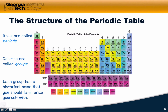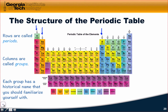Each group has a historical name that you should familiarize yourself with. Group one is known as the alkali metals. The second group is the alkaline earth metals. The 13th group is often referred to as the boron group. The oxygen group is called the chalcogens. Here we have the halogens. Group 18 is known as the noble or inert gases. And the chunk between group 2 and group 13 is known as the transition metals — this chunk that I'm boxing here in blue.